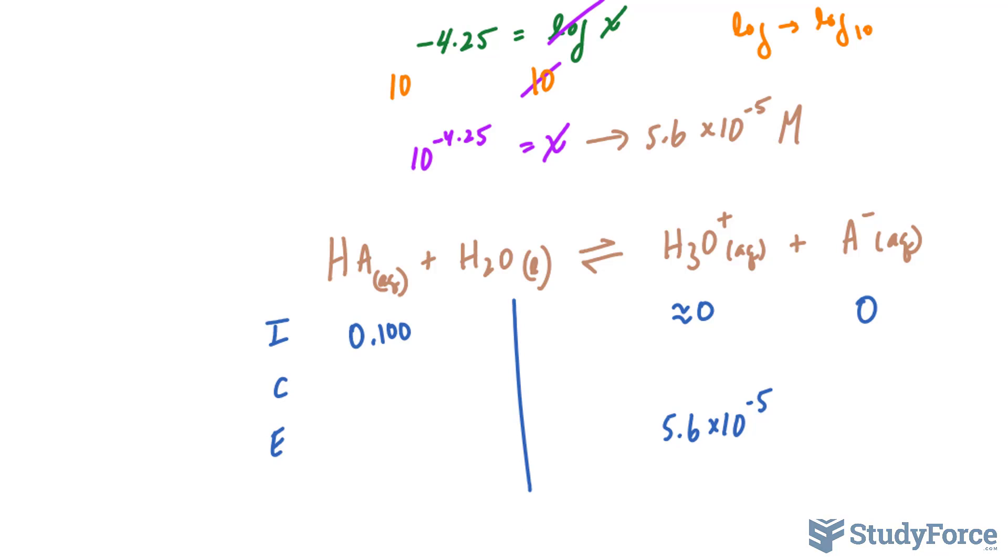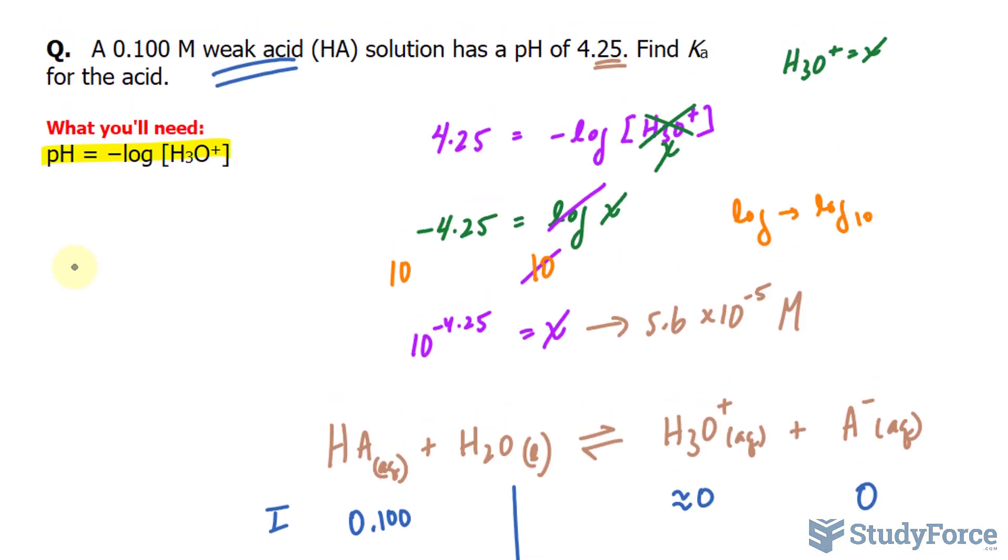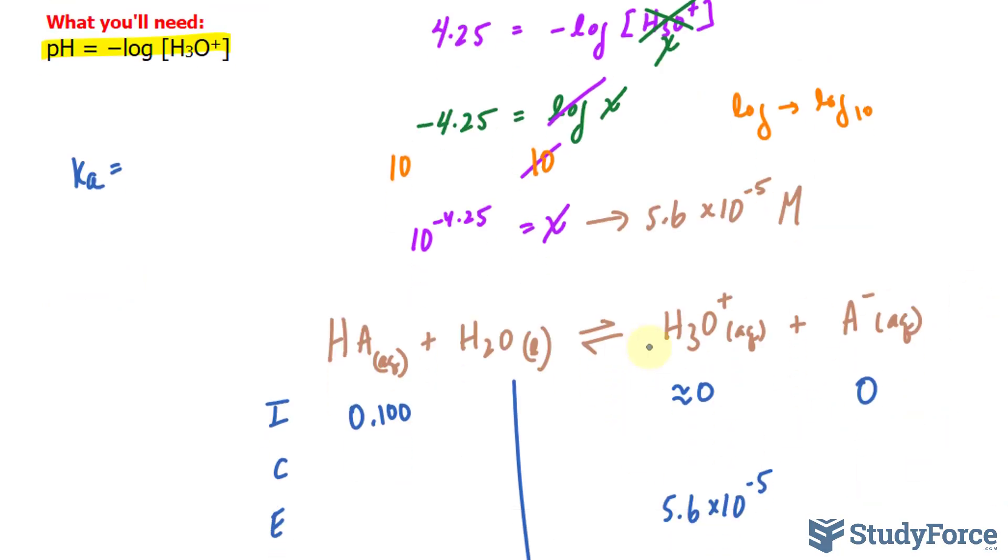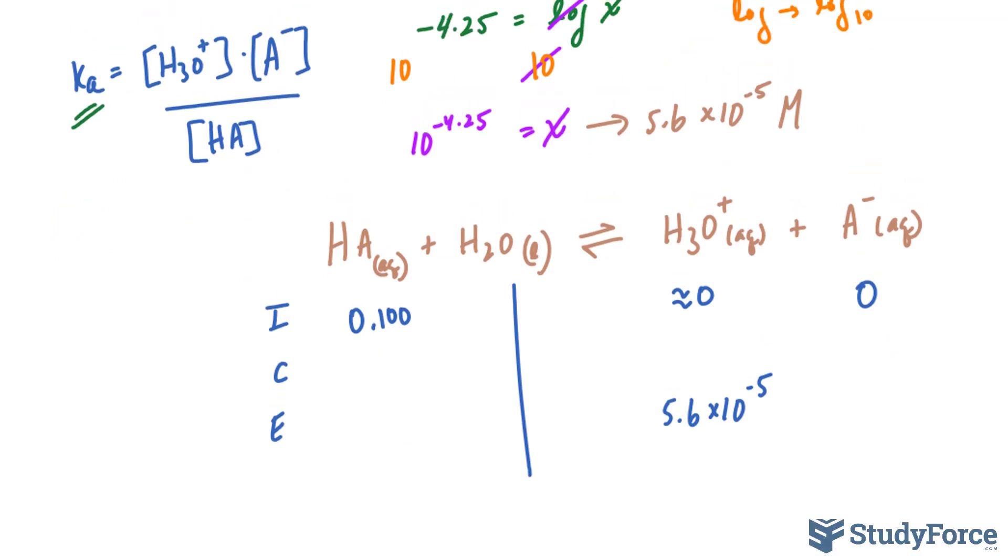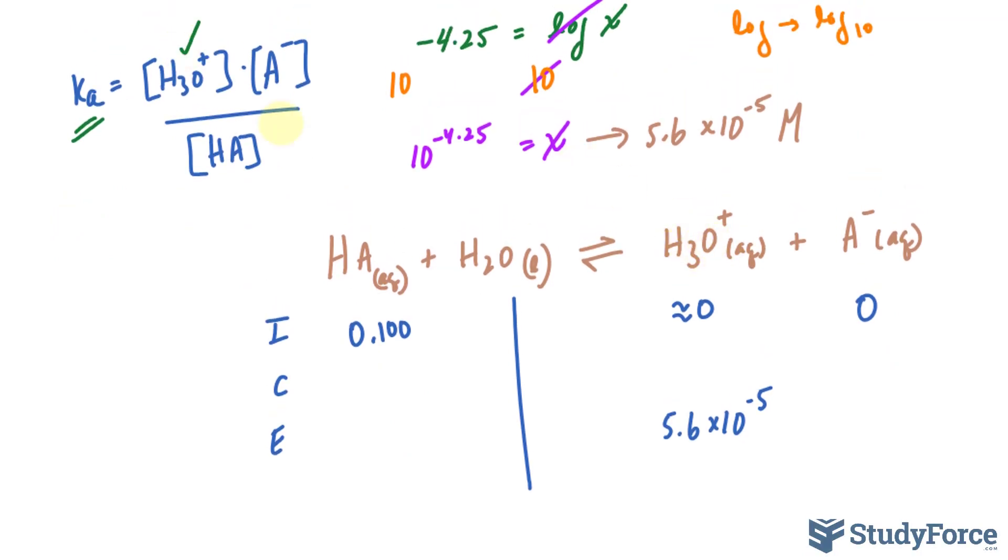Now let's write down the equilibrium expression in reference to Ka. That's a comparison of the concentrations of the products: H3O+ concentration at equilibrium times the concentration of A− over the concentration of the reactants. We are looking for Ka. We already have the concentration of H3O+. We need the concentration of A− and the concentration of HA at equilibrium.